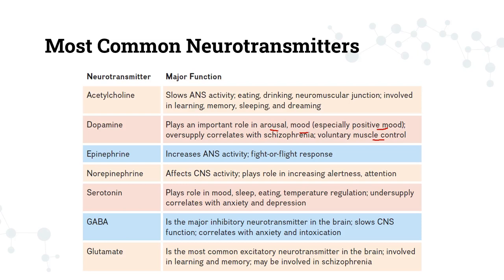Next is norepinephrine or noradrenaline — it affects the activity of the central nervous system and is important in alertness and attention. Then we have serotonin, which plays a huge role in regulation — particularly regulating mood, helping with sleep, eating, etc. The biological explanation for anxiety and depression is that there's a low supply of serotonin. What antidepressants do is block the reuptake of serotonin — preventing undersupply of this neurotransmitter — which is one way to treat conditions related to negative mood like depression.